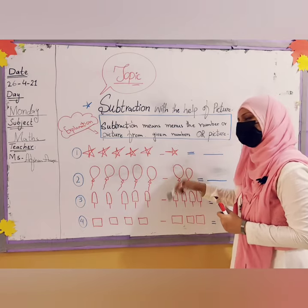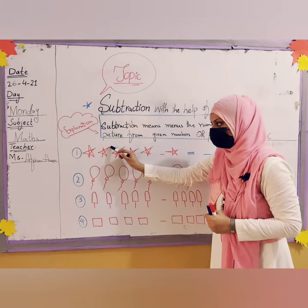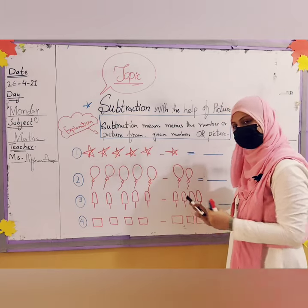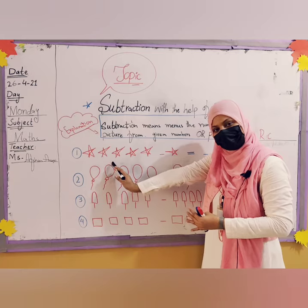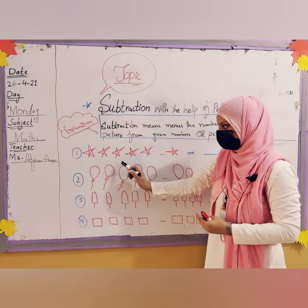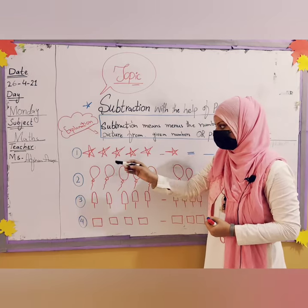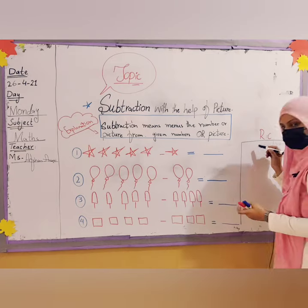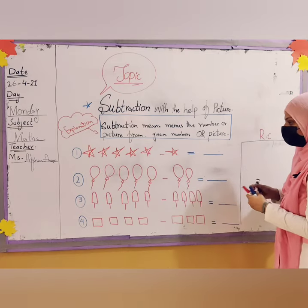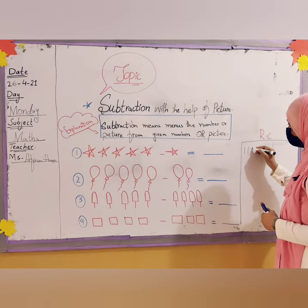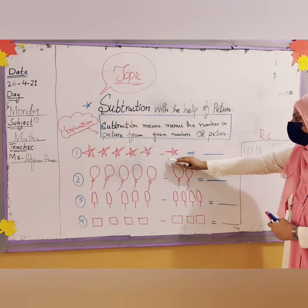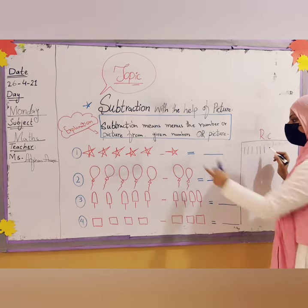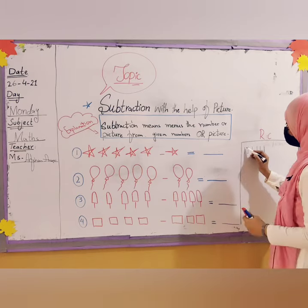If one star is on this side of the minus, you have to subtract that value from the other side. So in the rough column, draw lines for how many stars you have: one, two, three, four, five. The minus sign is there, and one star is to be subtracted.